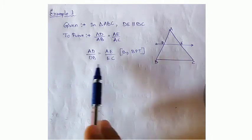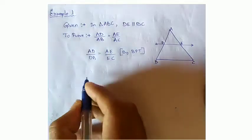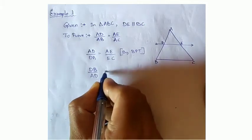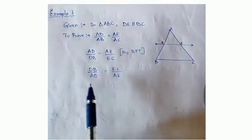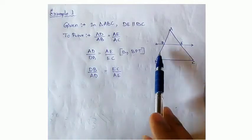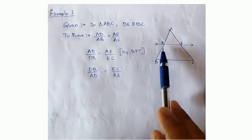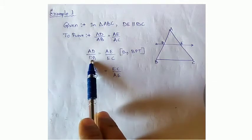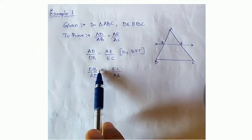So for that, what we have to do? First, reciprocal AD by DB and AE by EC. By reciprocating, we will get DB by AD equal to EC by AE. Why reciprocate? Because we need AB but we are getting DB. For DB, how much do we have to add? We have to add AD. So if you write DB in the denominator we can't add — that's why we made it into a reciprocal, so in the numerator we can add easily.